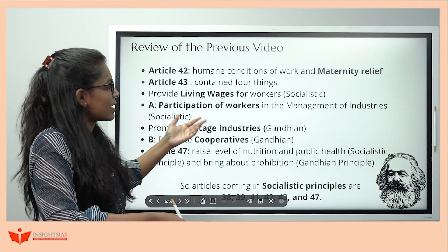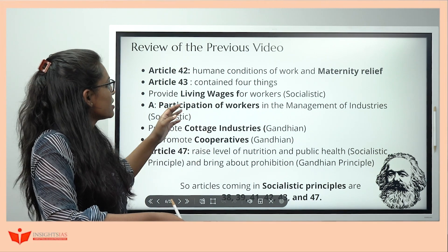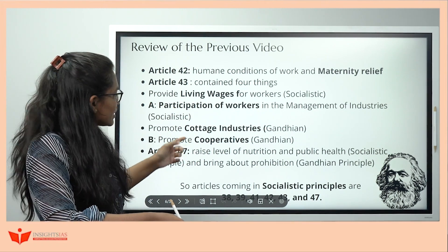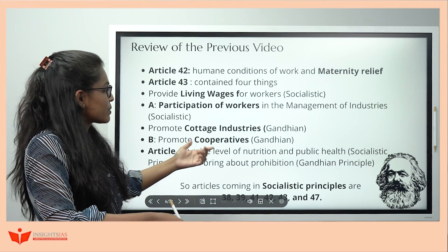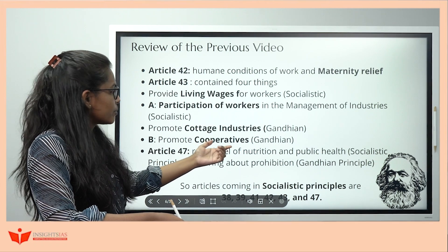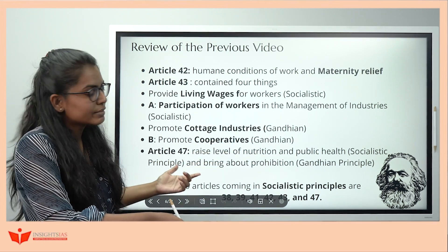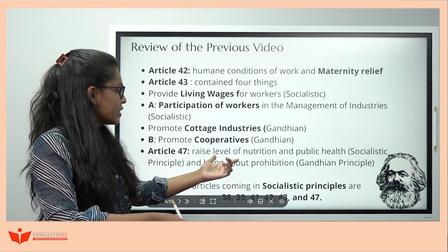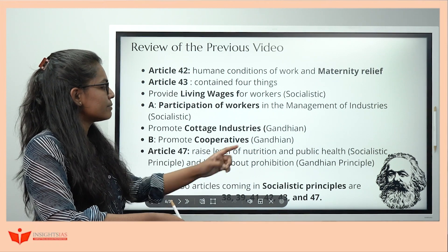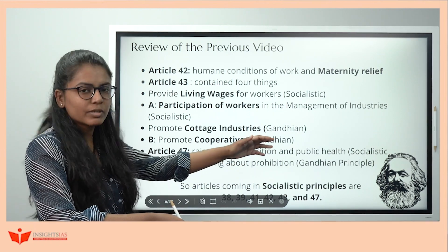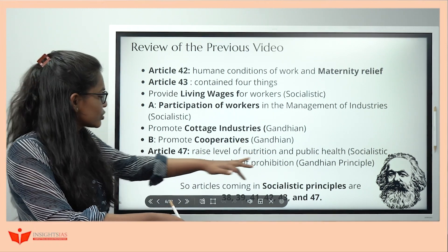Article 43 contains four things: living wages and participation of workers — we remembered it as the 'Slavery Act' — cottage industries, and promote cooperatives. Article 47 had both Socialistic and Gandhian principles: raise level of nutrition, improve public health, and bring about prohibition.